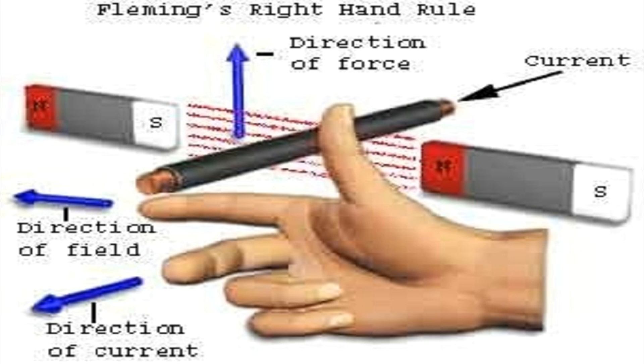Then the second finger represents the direction of the induced or generated current within the conductor, from the terminal with lower electric potential to the terminal with higher electric potential, as in a voltage source.